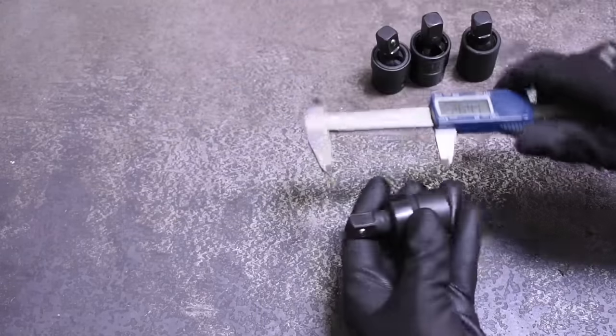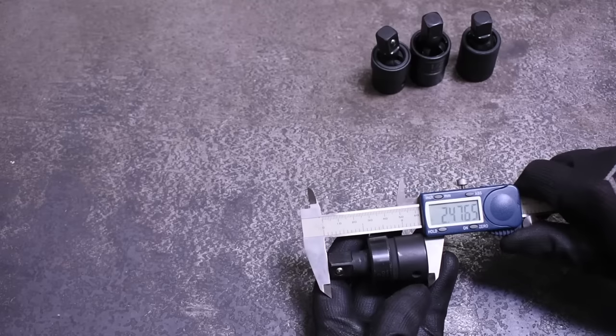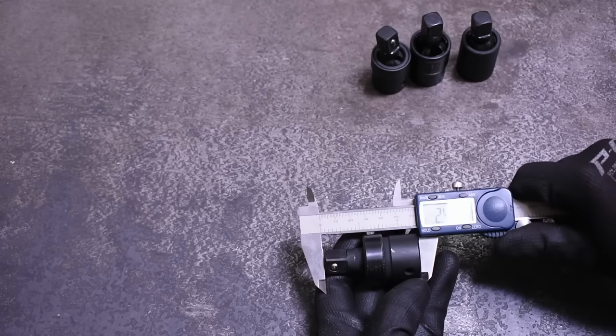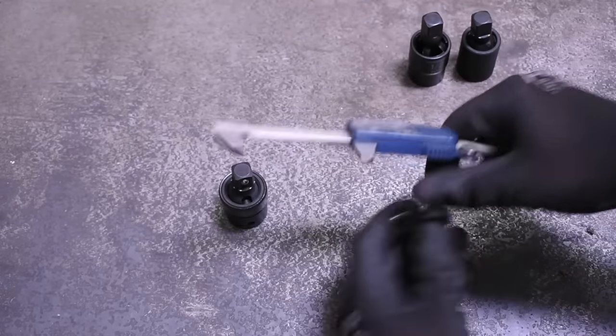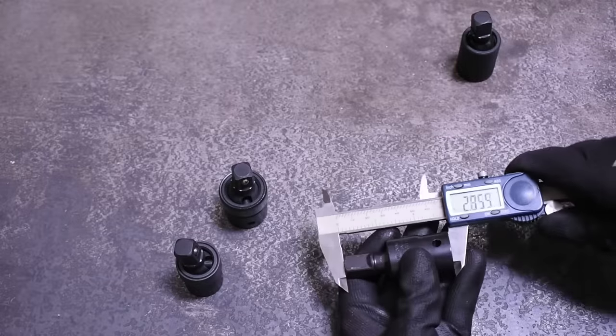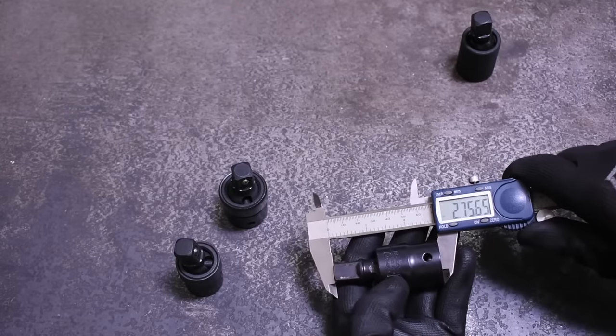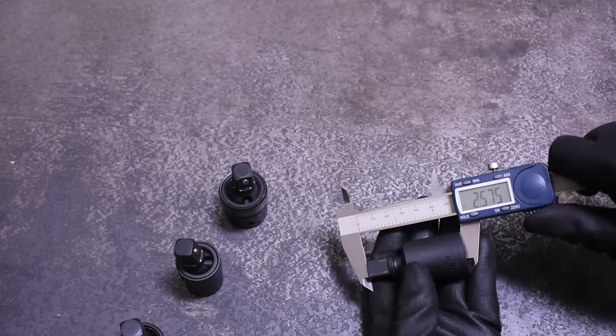But before we jump into the tests, we're touching on their specs a bit. First is the ones they don't advertise. Both pin universals measure about two point four seven inches, and the GearWrench X-Core comes in a noticeably longer two point seven five inches, whereas the Tekton comes in a bit shorter at two point five seven.